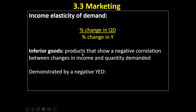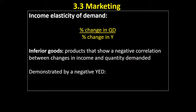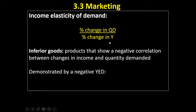There are three different categories of goods that you need to be aware of. The first type are inferior goods. These are products that show a negative correlation between changes in income and the quantity of that product demanded. In other words, as income goes up, the quantity demanded of a product will go down. As incomes increase, people buy less of a product — it's known as an inferior good. People get more money and they switch to consuming other goods.